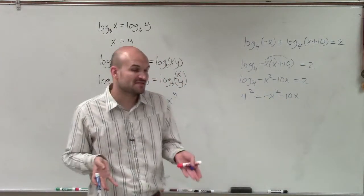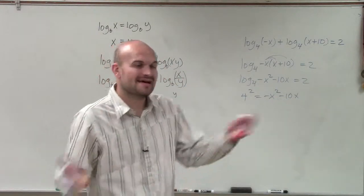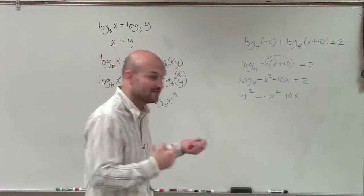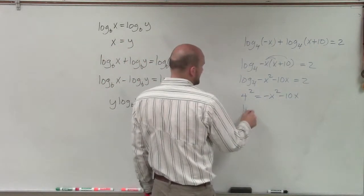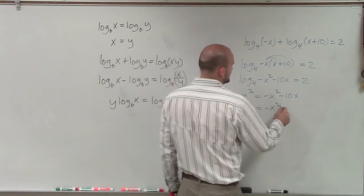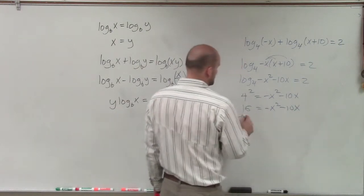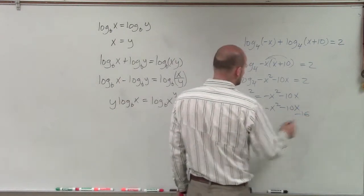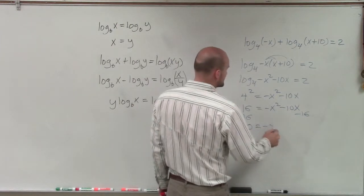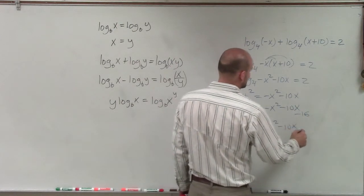Now, ladies and gentlemen, to solve this, you can see I have an x squared and an x. Well, I'm not just going to be able to easily solve this, so what I'm going to have to do is apply my factoring techniques. So therefore, I have 16 equals negative x squared minus 10x. So I can subtract 16 on both sides. Therefore, I have 0 equals negative x squared minus 10x minus 16.